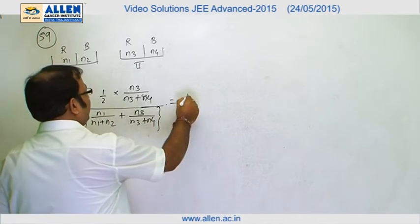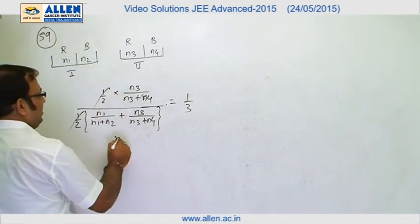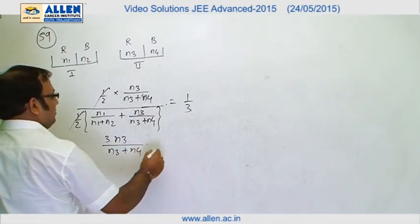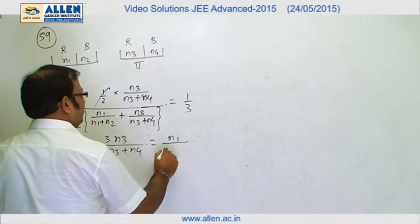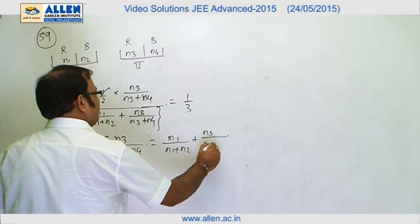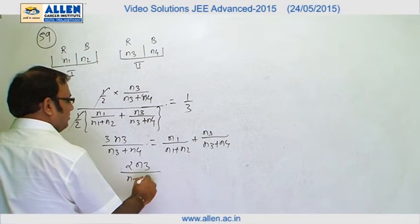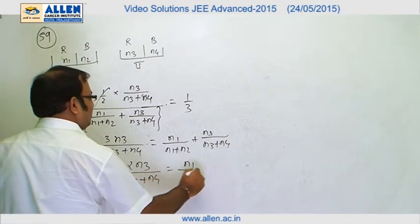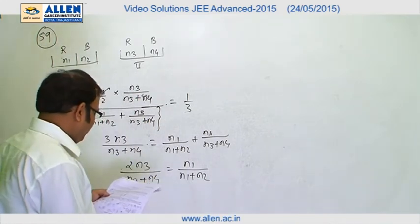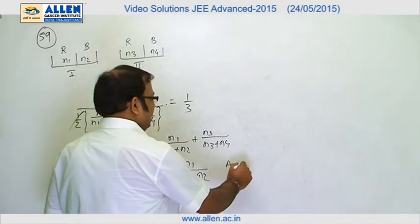This probability is given to be equal to 1/3. So basically: 3×n3/(n3+n4) = n1/(n1+n2) + n3/(n3+n4), which simplifies to 2×n3/(n3+n4) = n1/(n1+n2). Checking the options carefully, option A and option B satisfy this particular relation, so our answer is A and B for this question.